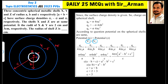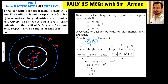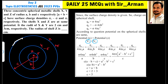The potential at the surface of X is the sum of contributions from all three shells. Due to shell X it is kQ_x / a. For shell Y, the potential inside and on the surface of Y due to charge Q_y is kQ_y / b. The potential due to shell Z at any point inside Z is kQ_z / c, where c is the radius of shell Z. So the total potential at surface X equals kQ_x/a + kQ_y/b + kQ_z/c.